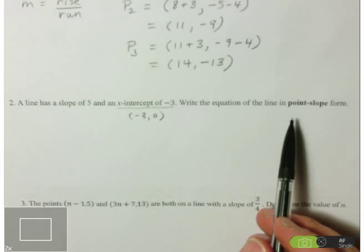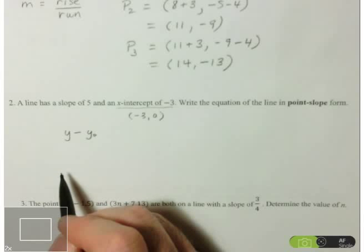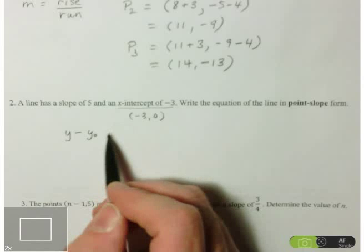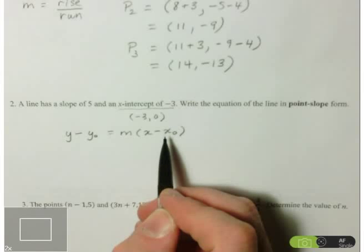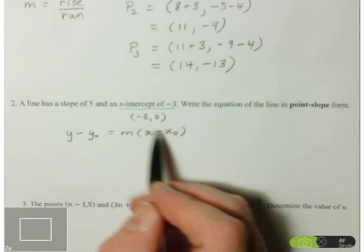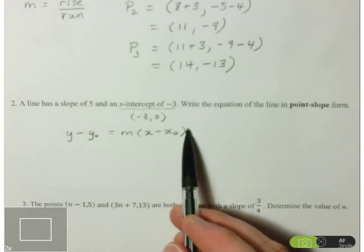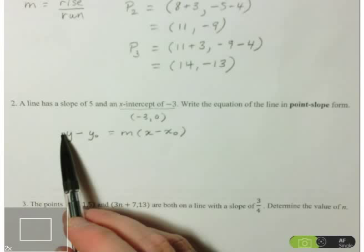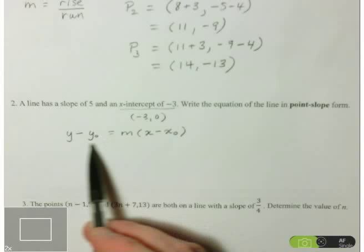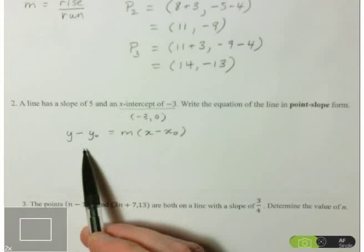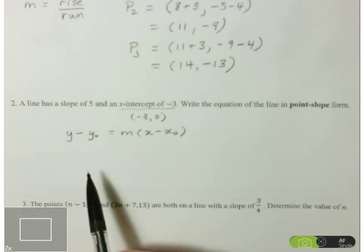Point-slope form looks like this: y minus y-naught equals the slope times (x minus x-naught), where y-naught is the given y-value (in this case 0) and x-naught is the given x-value (in this case negative 3). A good way to remember point-slope form is that it comes from the slope formula — if you take (x minus x-naught) and divide it to the other side, you get delta y over delta x equals the slope.